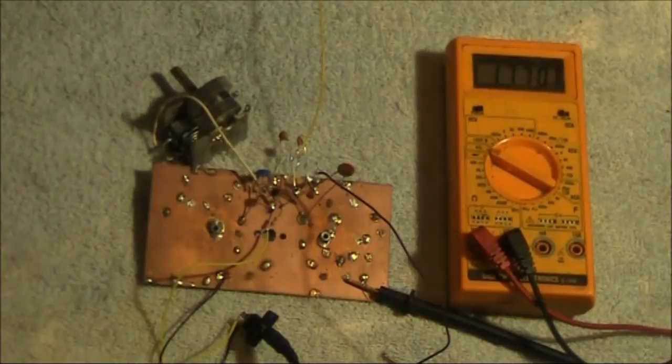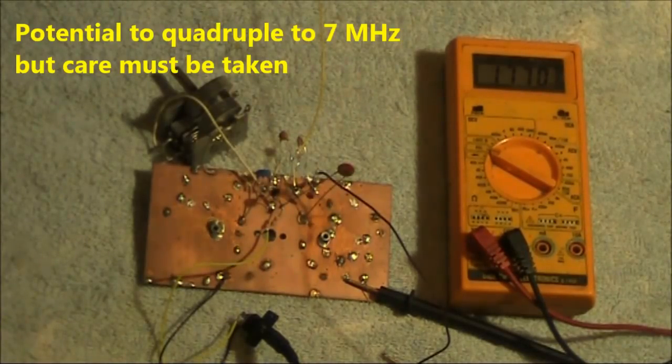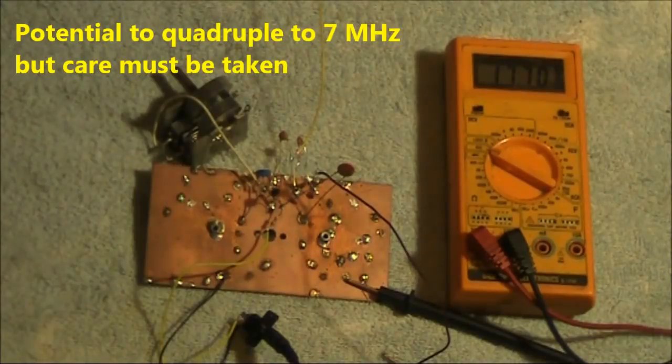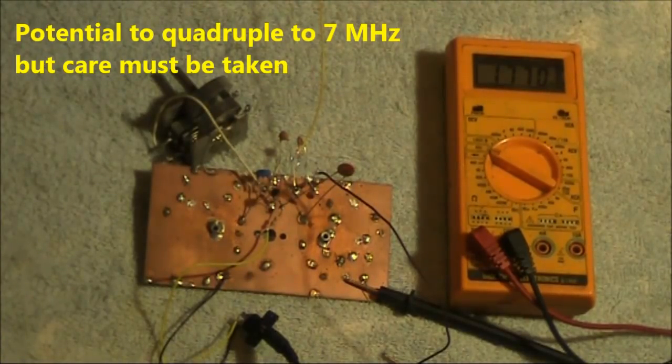What you're hearing in the background is a receiver tuned to 80 metres. Potentially, you could also quadruple it for 7 MHz. There, you'd cover both the CW and part of the SSB section of the band. Bear in mind that quadrupling frequency also quadruples drift. And if you don't build your oscillator in a shielded case with voltage regulation, then the drift is likely to be unacceptable.